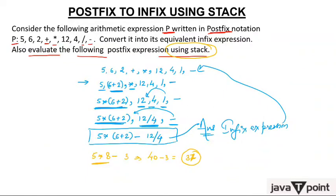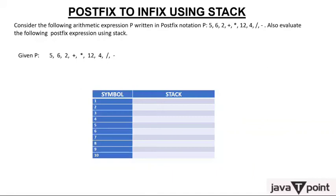Let's see how we solve this using stack. In the given postfix expression, at the right end put a right parenthesis. Give a number 1 through 10 to every symbol. Then put these in a symbol table: 5, 6, 2, +, *, 12, 4, /, −, and the closing bracket.